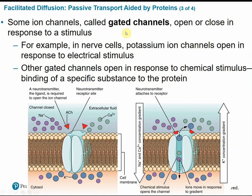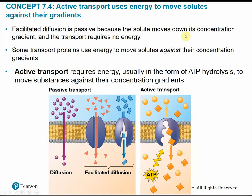Some ion channels facilitate the transport of ions or charged particles like sodium or potassium. Some ion channels have an extra layer of selectivity called gated channels — these channels only open under specific circumstances or in response to a specific stimulus. You have to have the correct key or signal to open these channels. One example is in nerve and muscle cells, where gated channels respond to a neurotransmitter called acetylcholine that binds to the specific receptor shape on the membrane protein. Once the nervous system sends that neurotransmitter signal, the channel opens and allows ions to flow across the membrane. Even with the assistance of membrane proteins, it's still passive transport because solutes are still moving down the concentration gradient — no energy required.